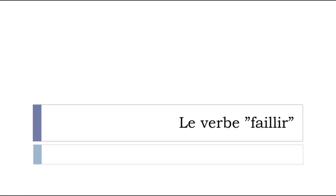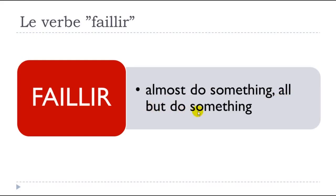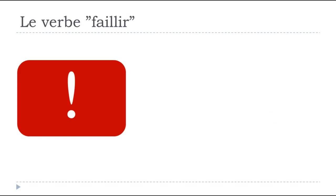Le verbe faillir. Okay, so we can start right now. Faillir is quite useful — it's a strange verb, but it is used quite a lot. The meaning of faillir is 'almost do something' or 'all but do something.' The important thing to keep in mind is that it is mostly used in the passé composé form.